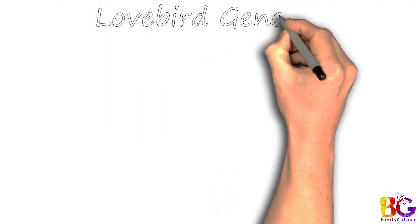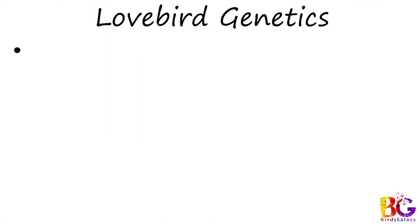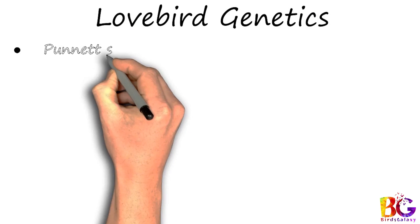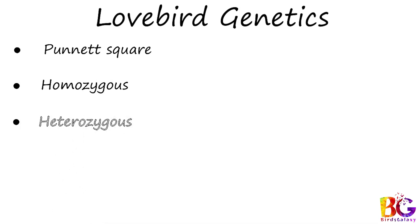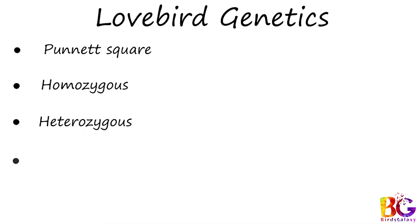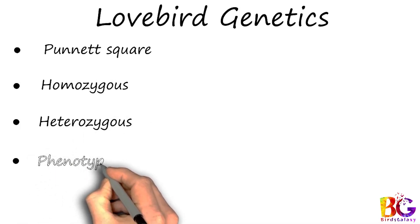Number 1: Punnett Square. Number 2: Homozygous. Number 3: Heterozygous. Number 4: Phenotype. Number 5: Genotype. These genetics topics are easy to understand, so let's start on the board.